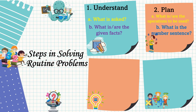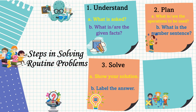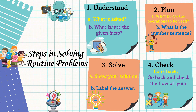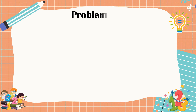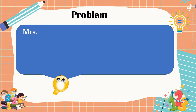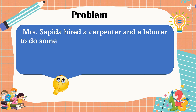The third step is to carry out the plan — let's solve the problem. In solving, show your solution and label the final answer. Lastly, we're going to check or look back. In checking, go back and check the flow of your computation. This is our first problem: Mrs. Sapida hired a carpenter and a laborer to do some repairs in her house.